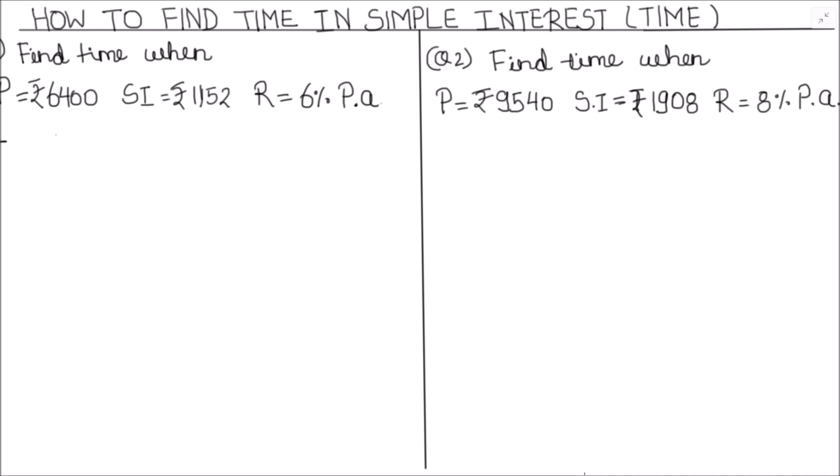We all know that simple interest formula is SI = P×R×T/100. From this formula we get the time period as T = SI×100/(P×R). This is the formula to find the time period.